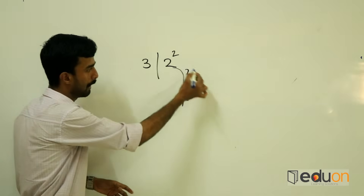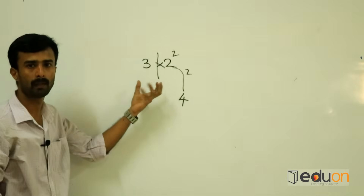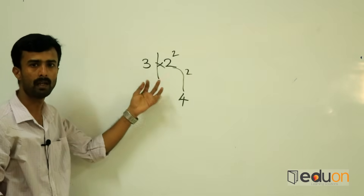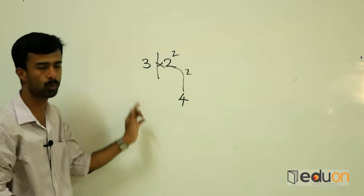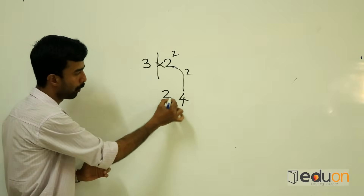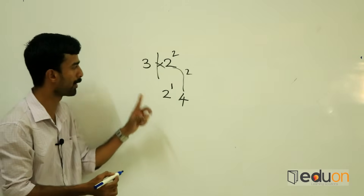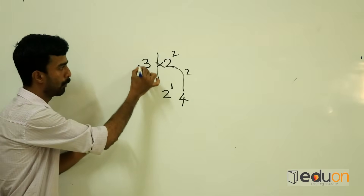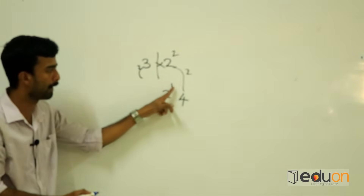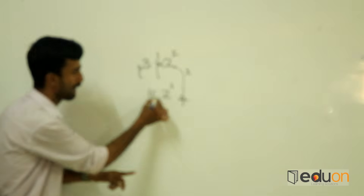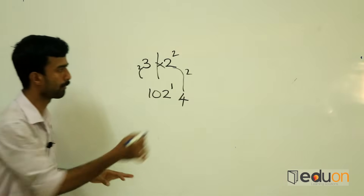The remainder is zero. Next, 3 into 2 is 6. 6 doubled is 12. Remainder is 1. Then, 3 squared is 9, plus 1 remainder is 10. This is the simple method.